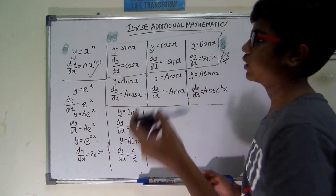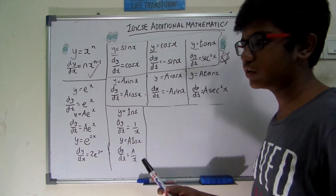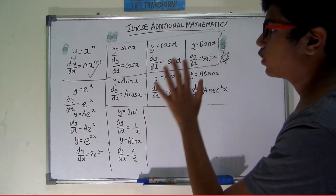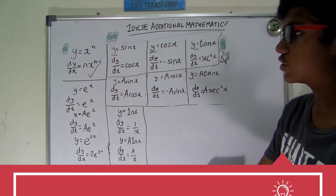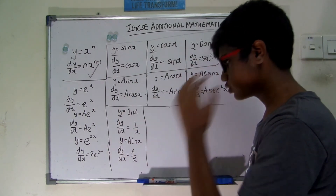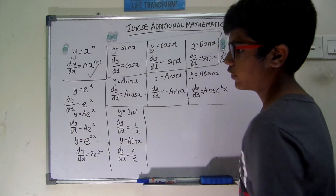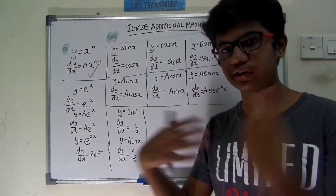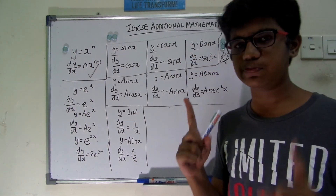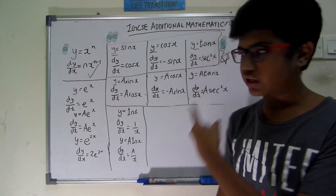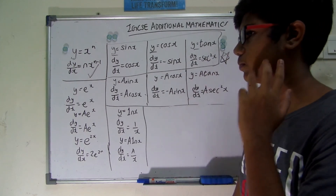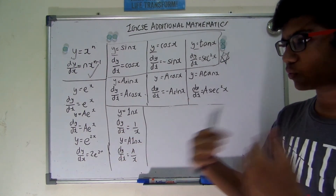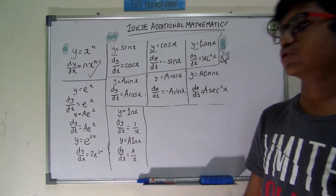These are the differentiation laws you must know for the exam: the power rule y equals x^n, the trig derivatives for sin x, cos x, and tan x, the natural log rule for ln x, and the exponential rule for e^x. With enough practice, these become automatic. In the next part we will go to differentiation techniques — how to apply these laws in different question types.